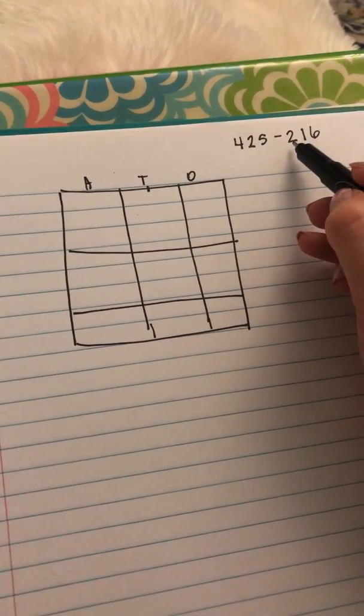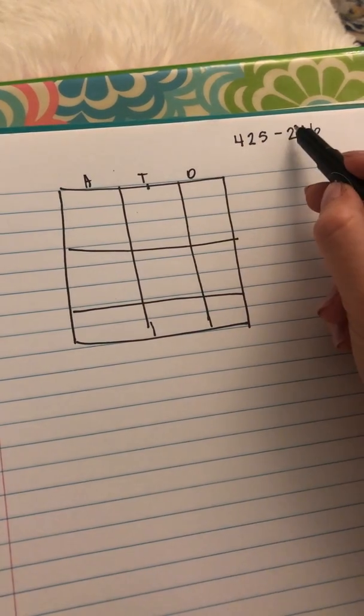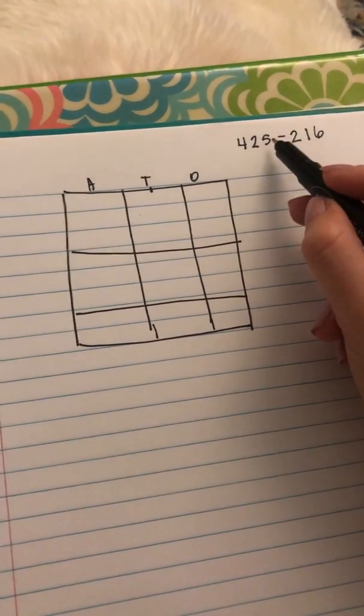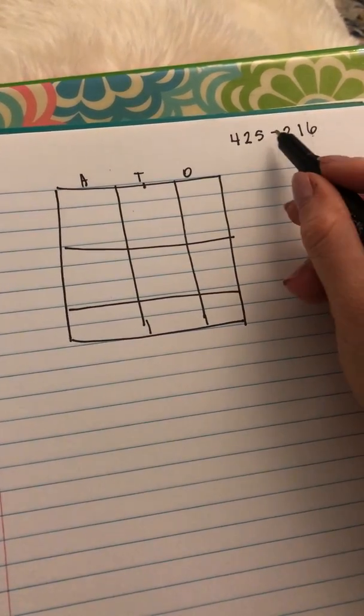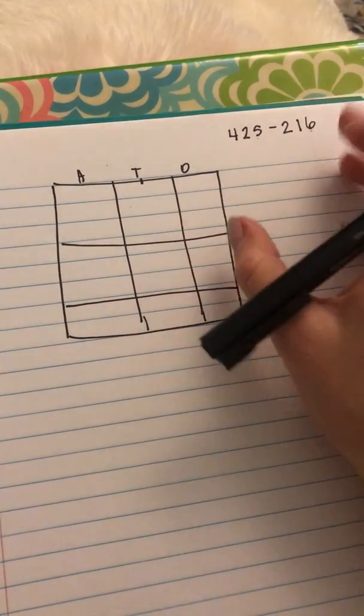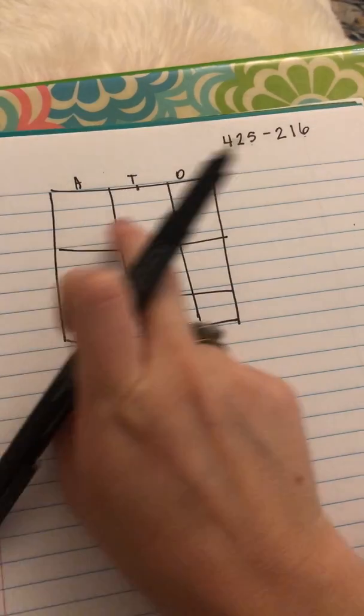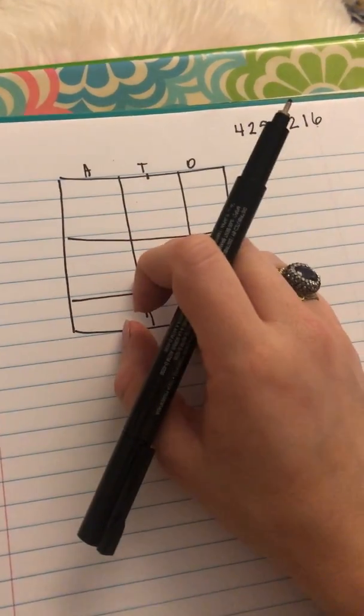So this is doing subtraction using two three-digit numbers, but we are going to have to regroup in order to do the subtraction. For this example, I'm only doing this in the ones place, but the same thing applies for when we move over into other place value areas and we do have to regroup.